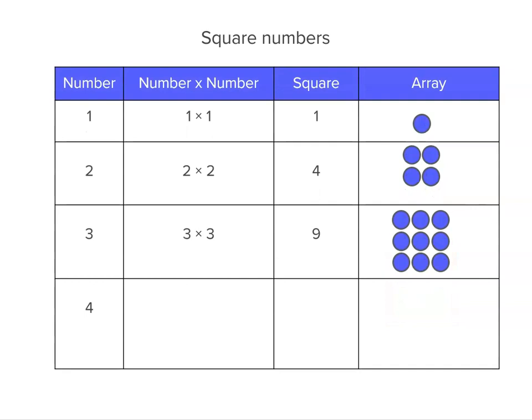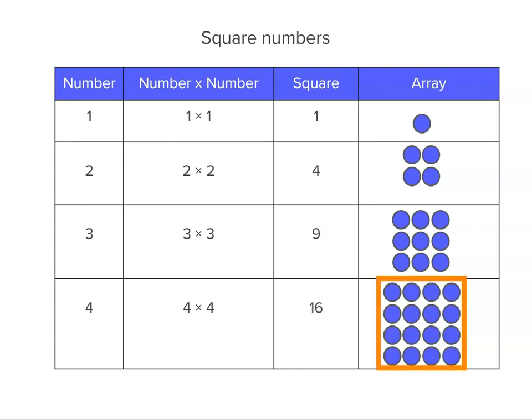Now let's do one more. If we've got the square of 4 that we're trying to find, it's 4 times 4. And the answer is 16. So we can have 4 rows and 4 columns. And we've got 16 in our array. So they look like squares, don't they?